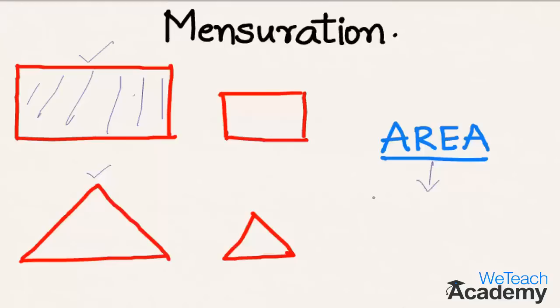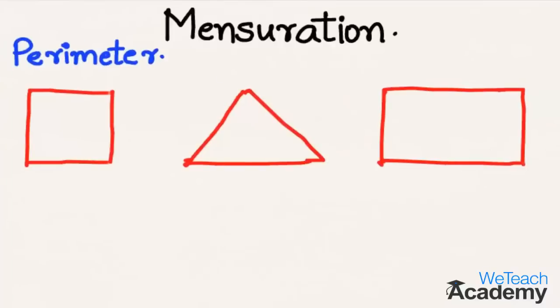So hence we can see that area is nothing but the space occupied inside the boundary of a simple closed figure. In other words, we can say that amount of surface inside the boundary is defined as area. And now let us proceed to perimeter with a few rough diagrams over here.